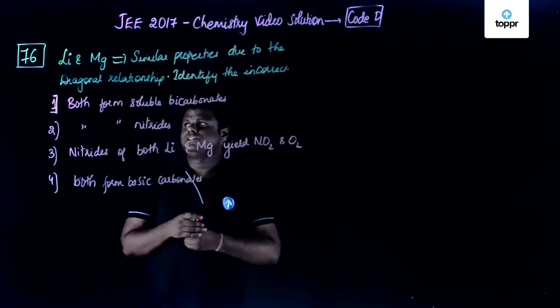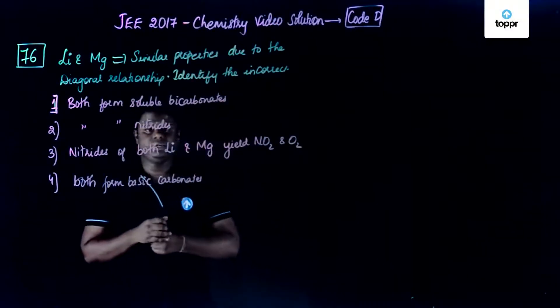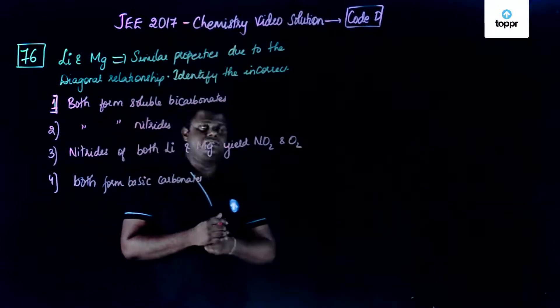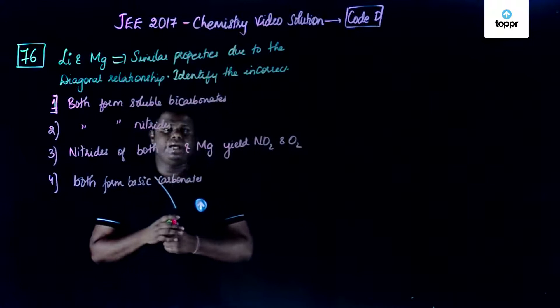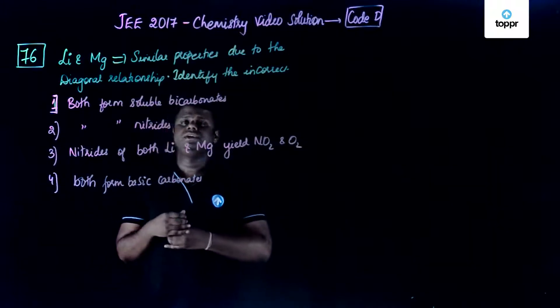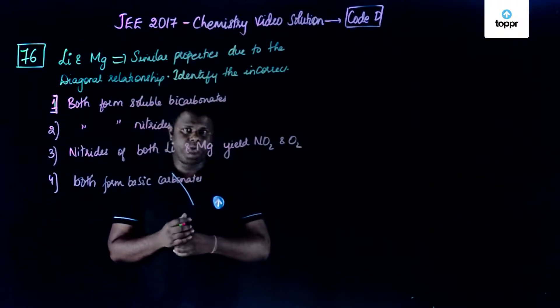Now let's move on to question number 76 of the JEE 2017 paper, and this is code D again. So now this is related to s-block elements, that is chemistry of group 1 and group 2.